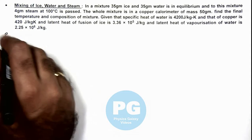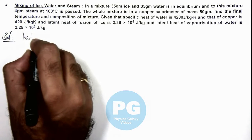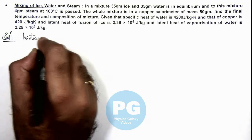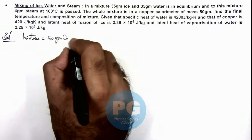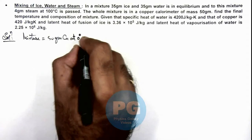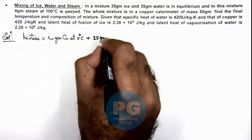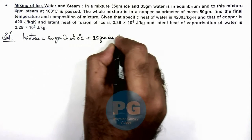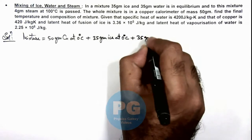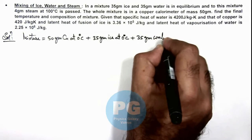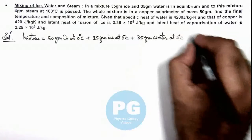In the solution, the mixture given in the problem consists of: 50 gram copper at zero degree centigrade, plus 35 gram ice at zero degree centigrade, plus 35 gram water at zero degree centigrade, and 4 gram steam at 100 degree centigrade.